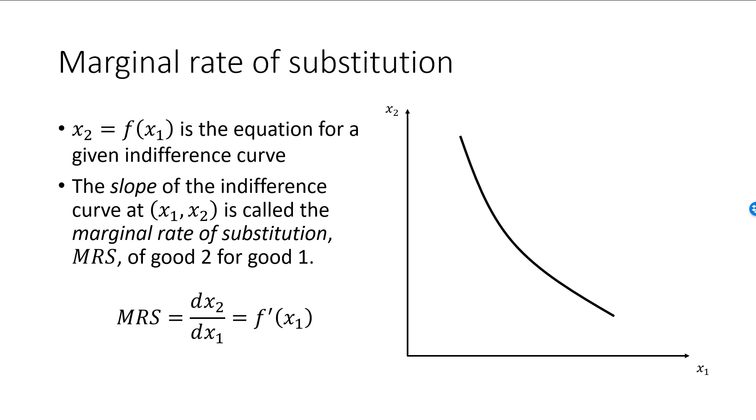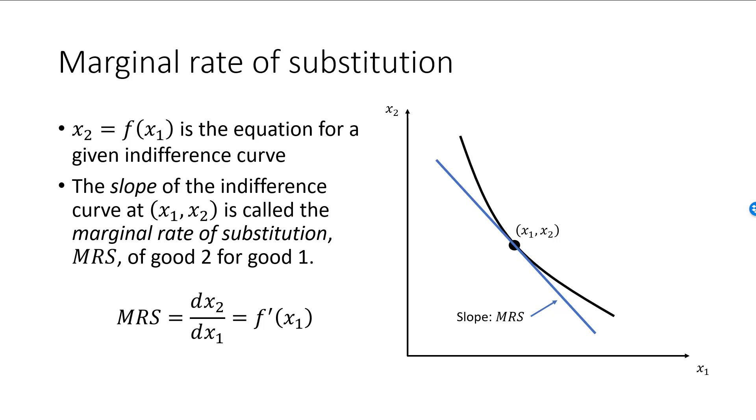Here is an indifference curve and an arbitrary bundle on the indifference curve. The blue line is the tangent to the indifference curve at x1, x2, and the slope of this tangent is the MRS. Keep in mind that MRS varies along the indifference curve, making it a function of x1 and x2. Here is a simple example. I have a given bundle with 8 units of the first good and 2 units of the second good. Say that the indifference curve for this bundle has equation x2 equals 16 divided by x1.